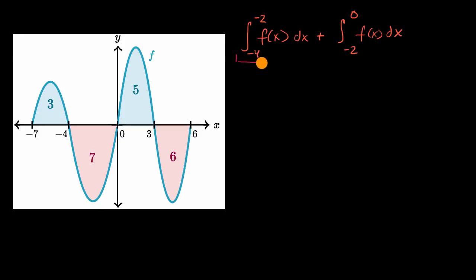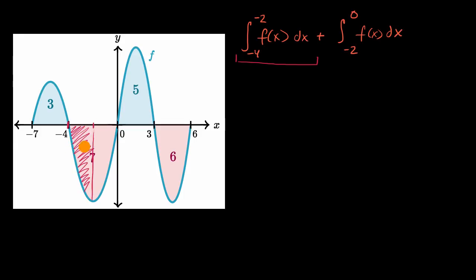This first part of our expression — the definite integral from negative four to negative two of f of x dx — we're going from x equals negative four to x equals negative two. This would evaluate as the area between our curve and our x-axis, but it would be the negative of that area because our curve is below the x-axis. We can't estimate it directly from the given information alone.